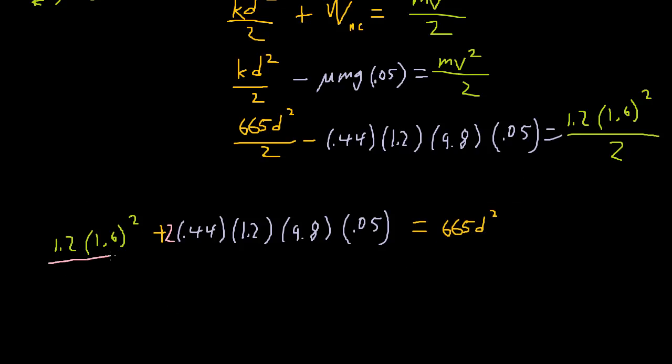And we're left with d squared. And now we just take the square root of this whole thing. So d is the square root of this plus this over 665. Let's just plug that into the calculator.